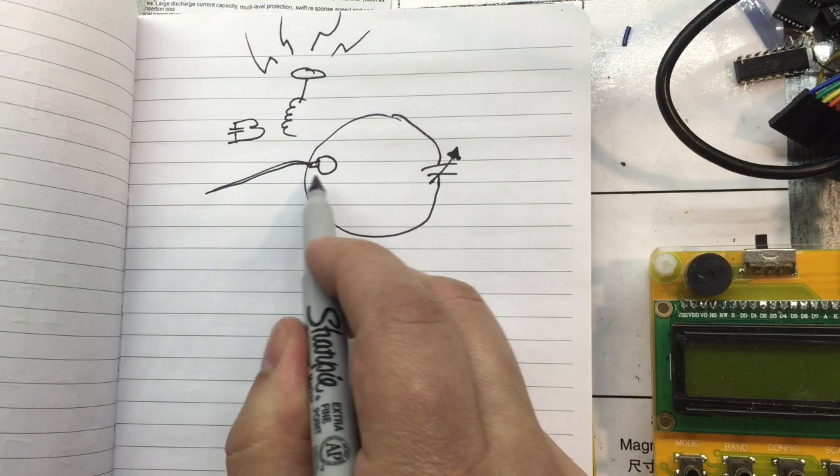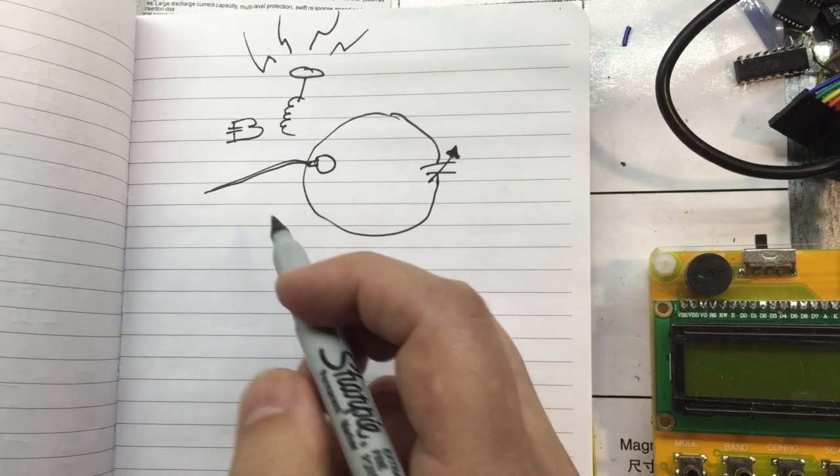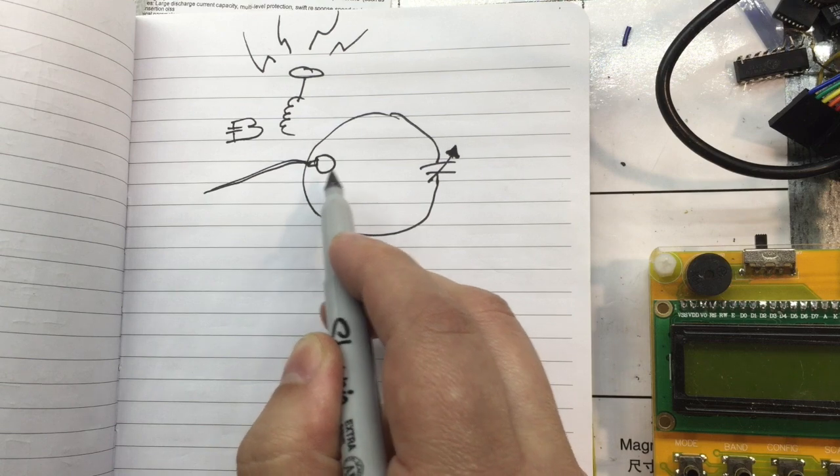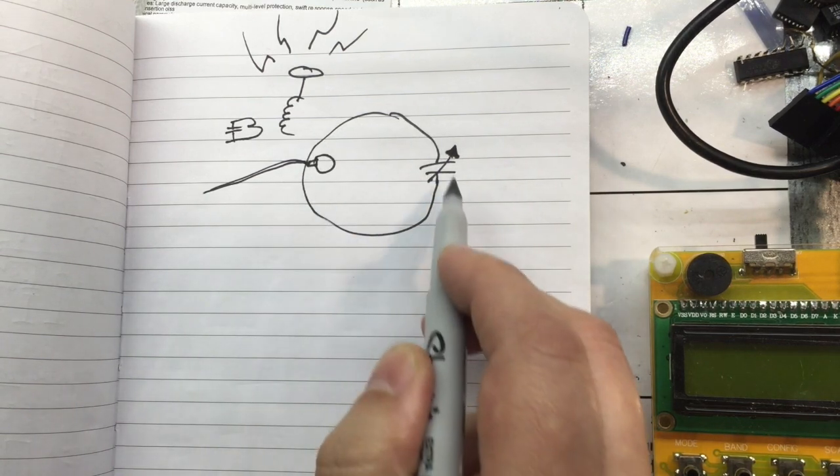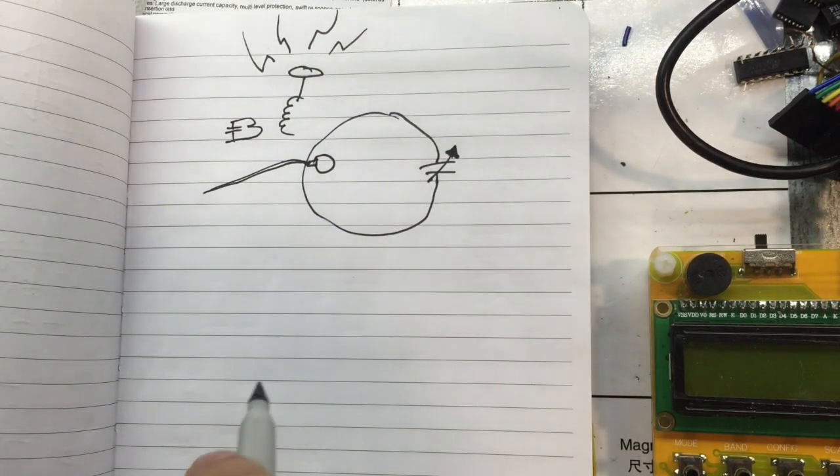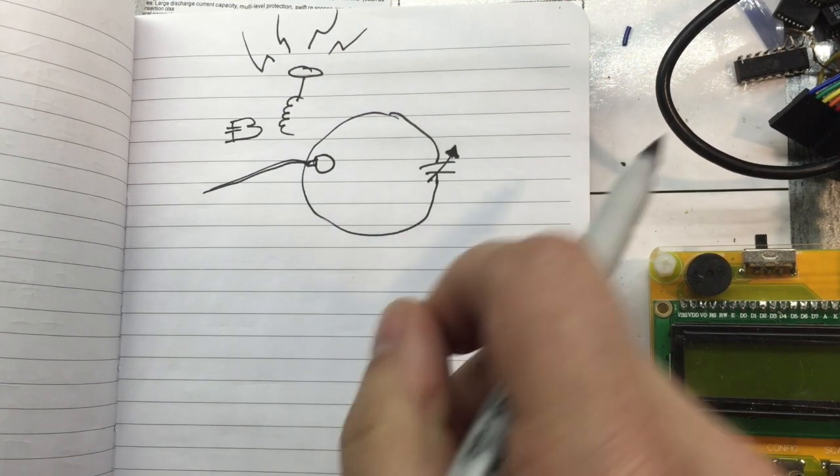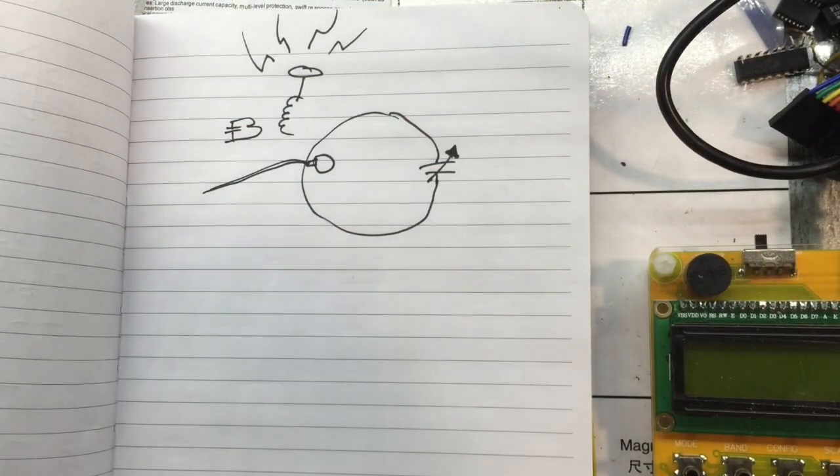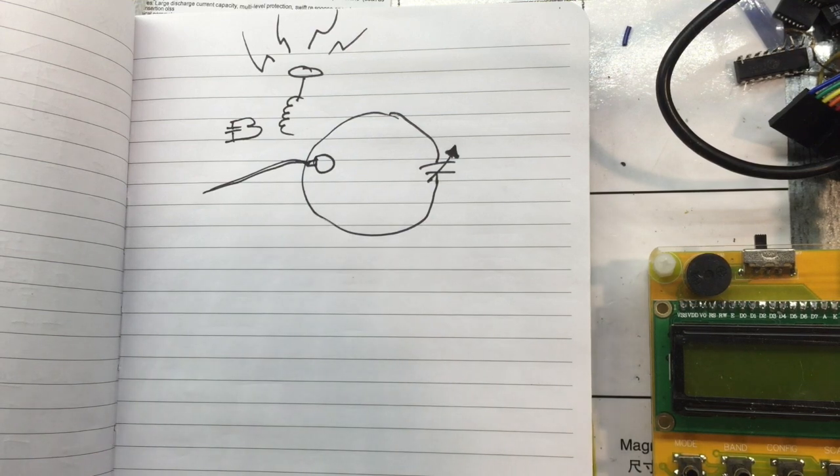So what happens is you feed your signal in here. Well, actually, this can be used as a receiver transmit. If you're transmitting, you'd feed your signal in here, and it would couple to the big loop resonantly. So you get lots and lots of current circling around in here, possibly multiple amps, and that will radiate your signal. Actually, the signal radiates off to the sides, not through the loop in this configuration.